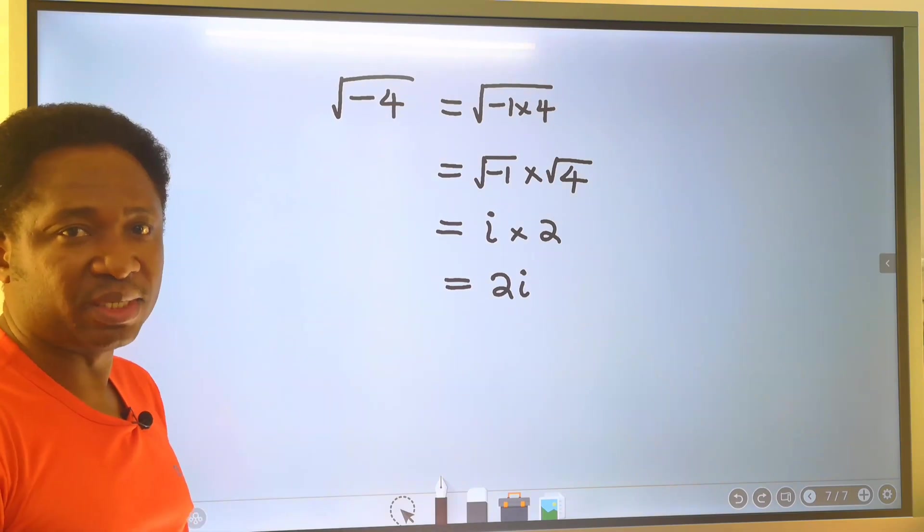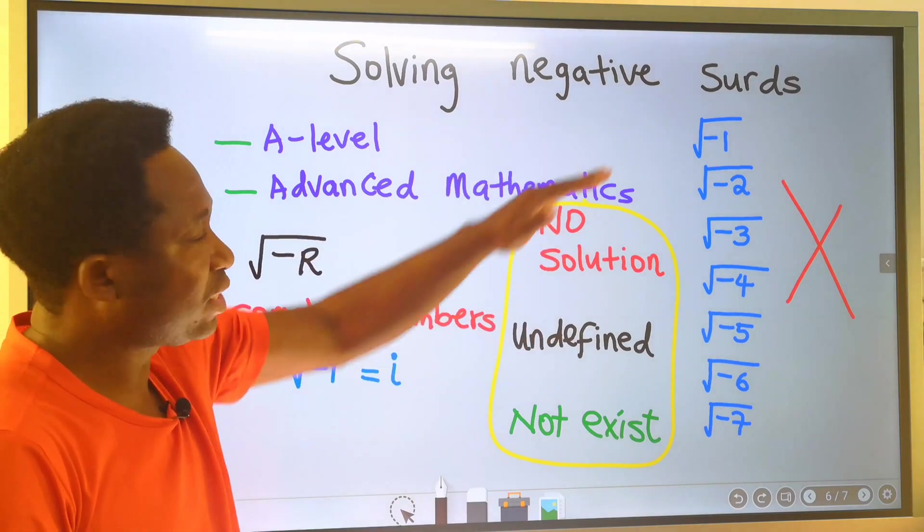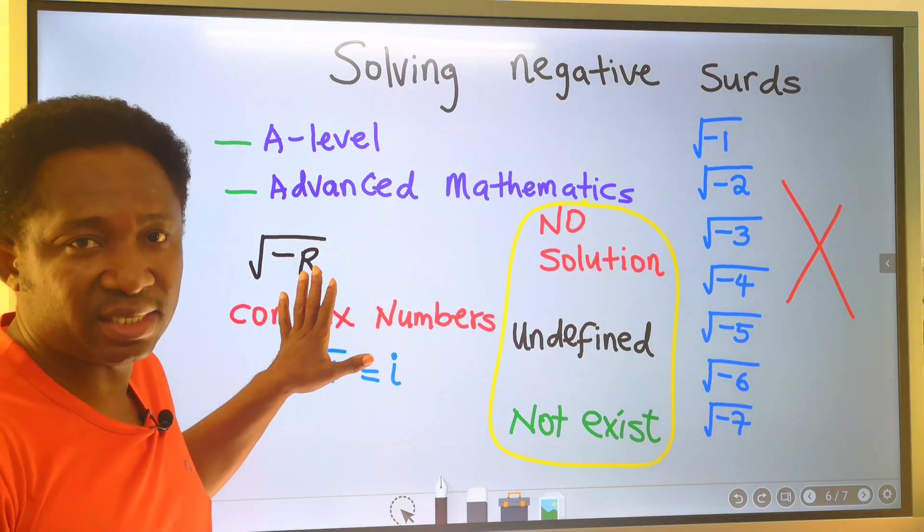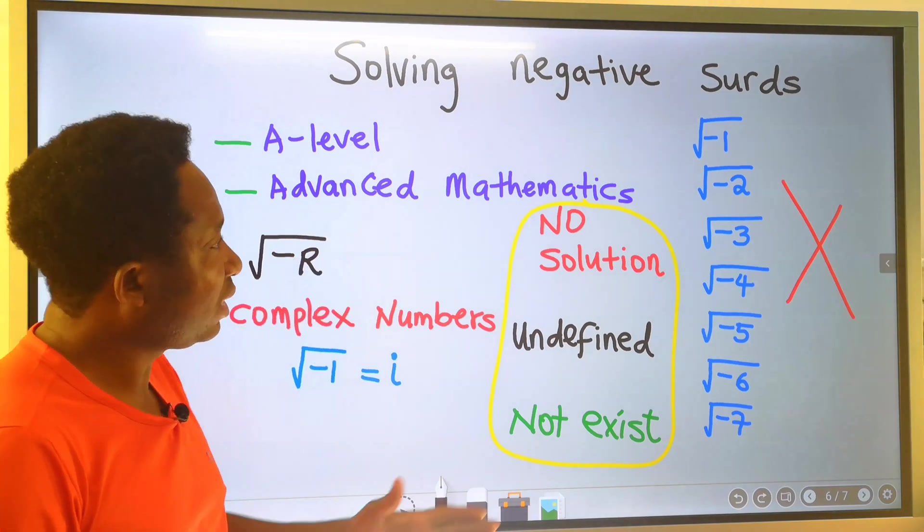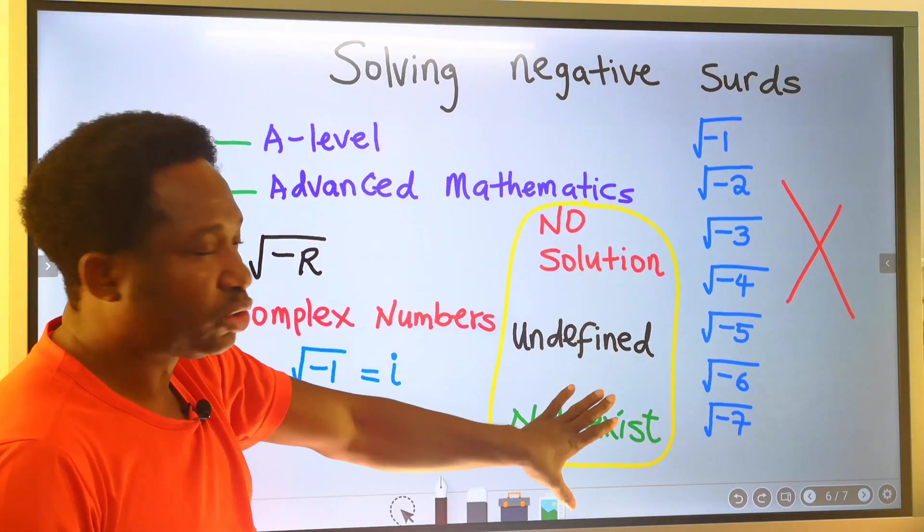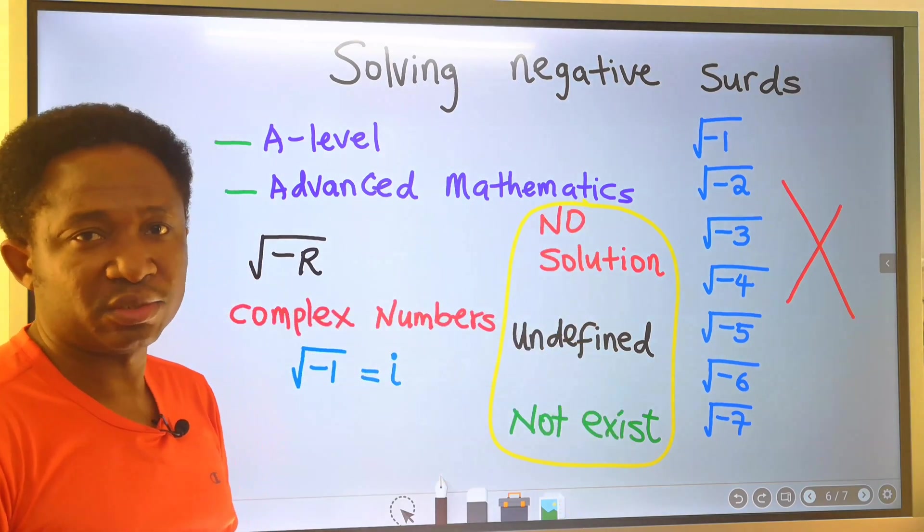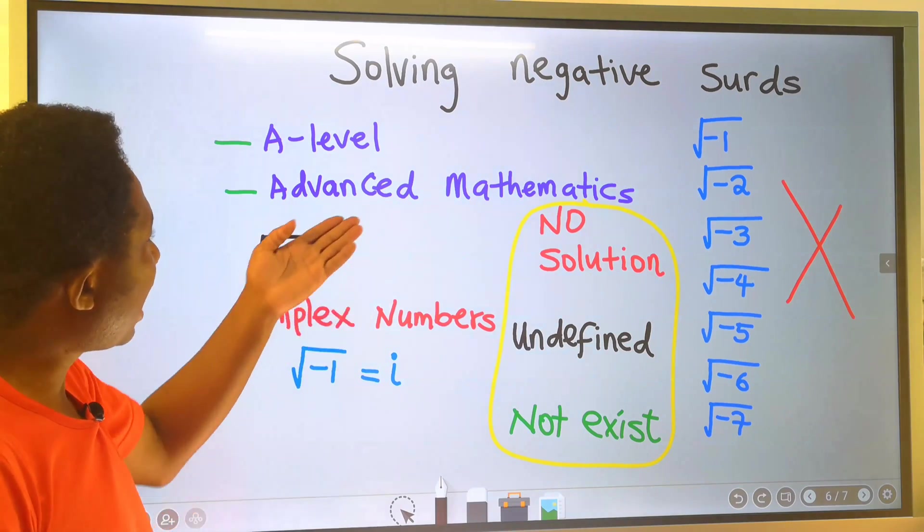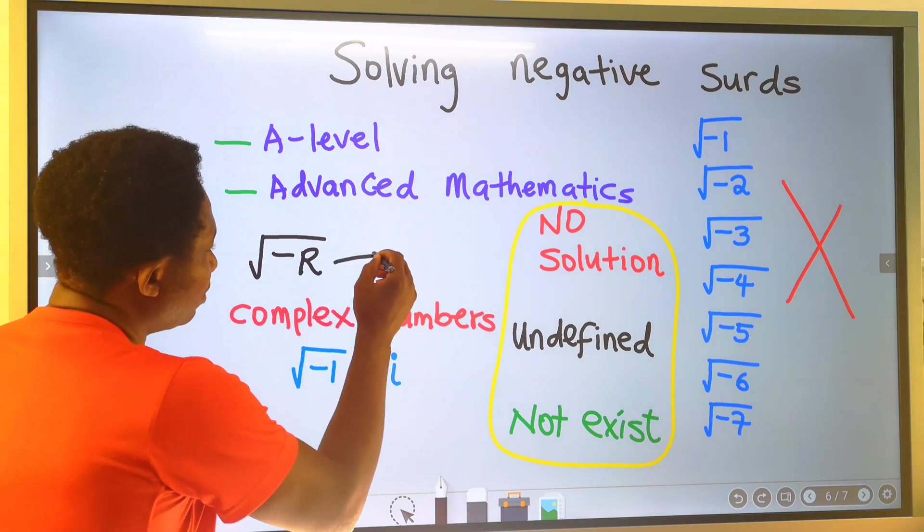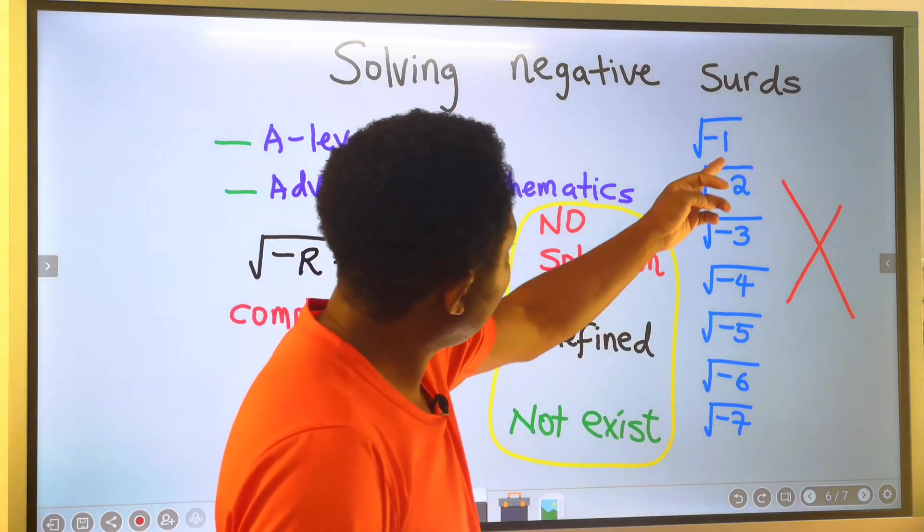However, when you are considering algebraic surds, complex numbers do not exist. At this stage, we simply say that these are undefined or do not exist or have no solution. But in A-level and advanced mathematics, it has a solution where r is any real number, and these are real numbers.